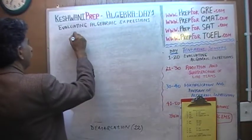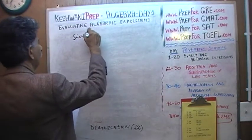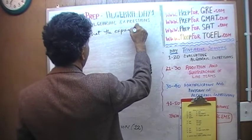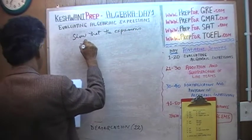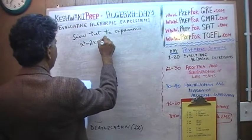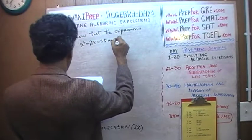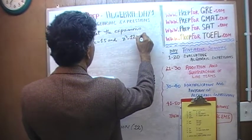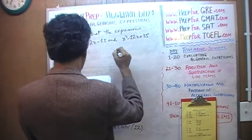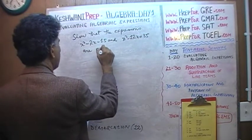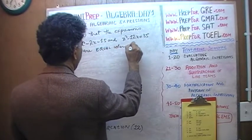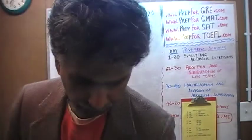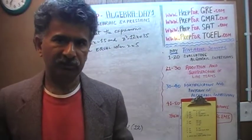What we have here is a question: show that the expressions x squared minus 2x minus 15, and the expression x squared minus 12x plus 35, are equal when x equals 5. That's what we are asked to do — show that these two expressions are equal when x assumes the value of 5.